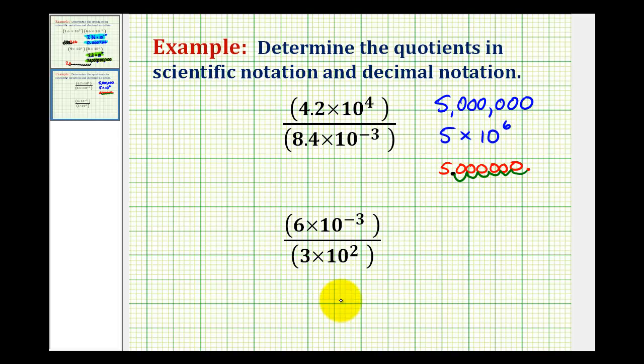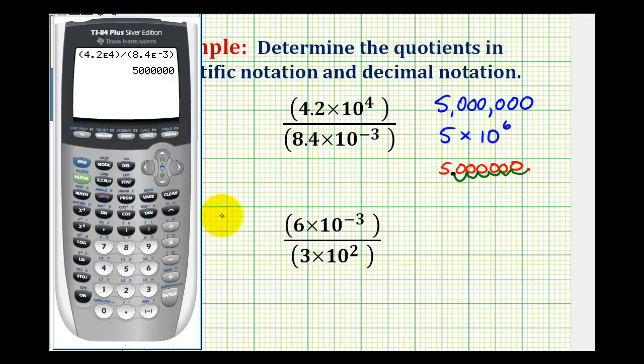Let's go ahead and just try one more for practice. So our numerator is 6 times 10 to the negative 3. So we type in 6 second comma negative 3. And we'll divide this by 3 times 10 to the second entered as 3 second comma 2.